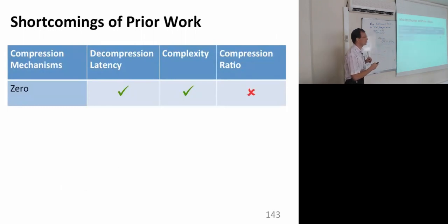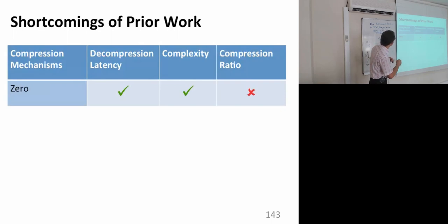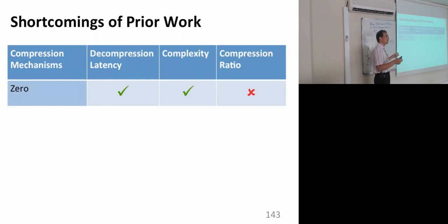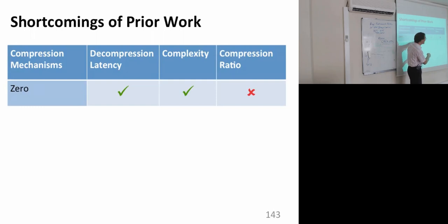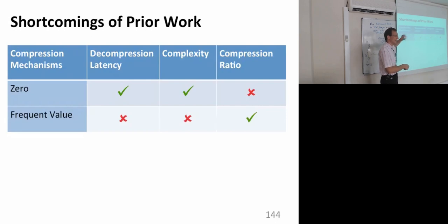Let's take a look at some previous mechanisms. With zero compression, if a cache block is zero, compress it; otherwise don't. The compression latency is really fast — you have one bit saying the cache block is zero or not. Complexity is nice. The compression ratio is not good — surprisingly it's about 20%, but not high. Frequent value compression identifies which values are frequent in cache blocks and compresses those accordingly, for example values of one or minus one or all 0xFFs.